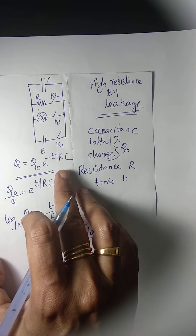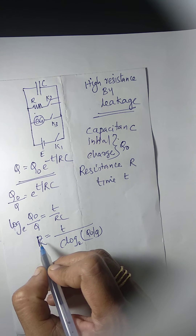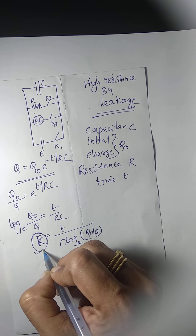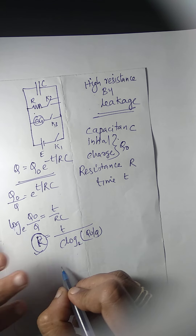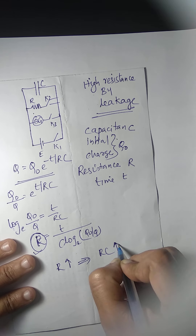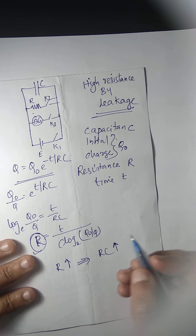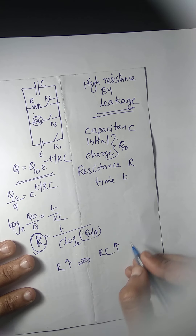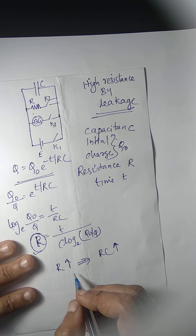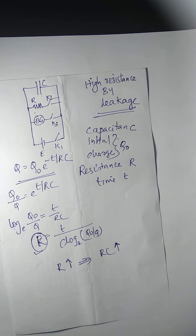This is the mathematical background we have already covered. Now, if R is high, then RC will also be high, and the rate of discharge of the capacitor will be very slow. Hence we can determine Q0 by Q from the experiment, and R can be calculated.